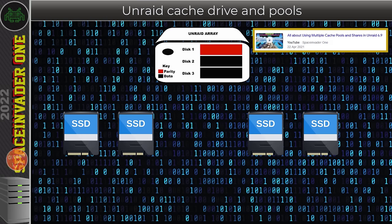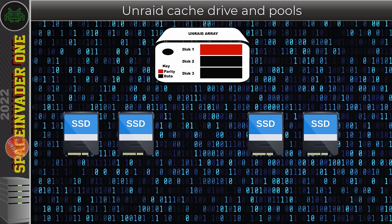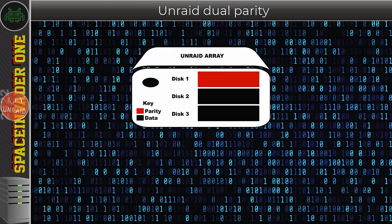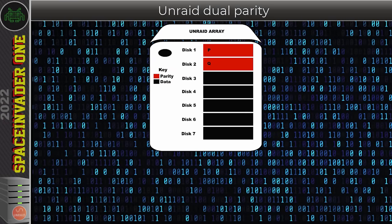ZFS is rumoured to be coming to unRAID soon, possibly in version 6.11, which many people are looking forward to for creating unRAID ZFS pools. You can already use ZFS on unRAID via a plugin. Regarding dual parity: many people mistakenly think the two parity drives are just mirrors of each other. If that were the case, the second parity disk would only protect against the first parity disk failing. Having two parity disks actually allows two data drives to fail simultaneously — so the second parity disk is definitely not just a copy of the first.